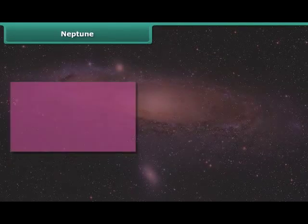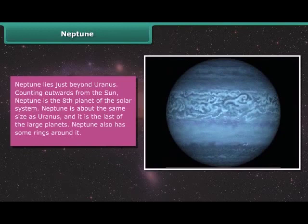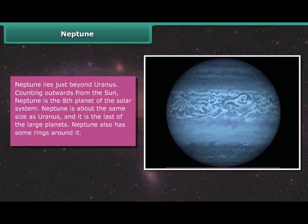Neptune lies just beyond Uranus. Counting outwards from the Sun, Neptune is the eighth planet of the solar system. Neptune is about the same size as Uranus and it is the last of the large planets. Neptune also has some rings around it.